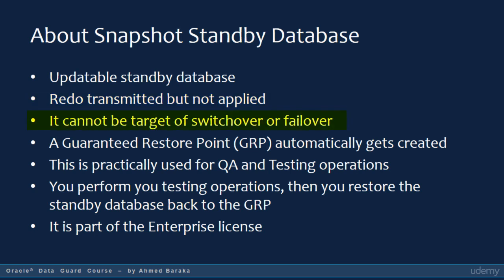The redo will not be applied. The snapshot standby database itself cannot be a target of switchover or failover. If you want to switch over or fail over to the standby database, you have to convert the snapshot standby database back to the physical standby database. When you create a snapshot standby database, Oracle will automatically create a guaranteed restore point, GRP.